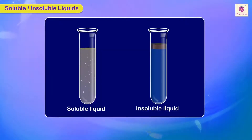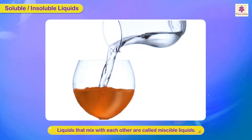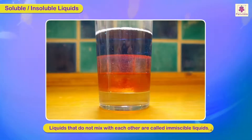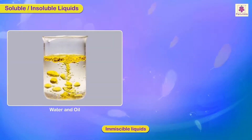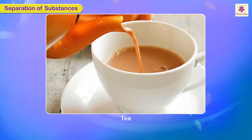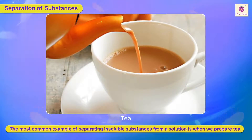Soluble and insoluble liquids: liquids that mix with each other are called miscible liquids. Water and milk, and vinegar and oil, are some examples. Water and oil are examples of immiscible liquids — liquids that do not mix with each other. The most common example of separating insoluble substances from a solution is when we prepare tea.